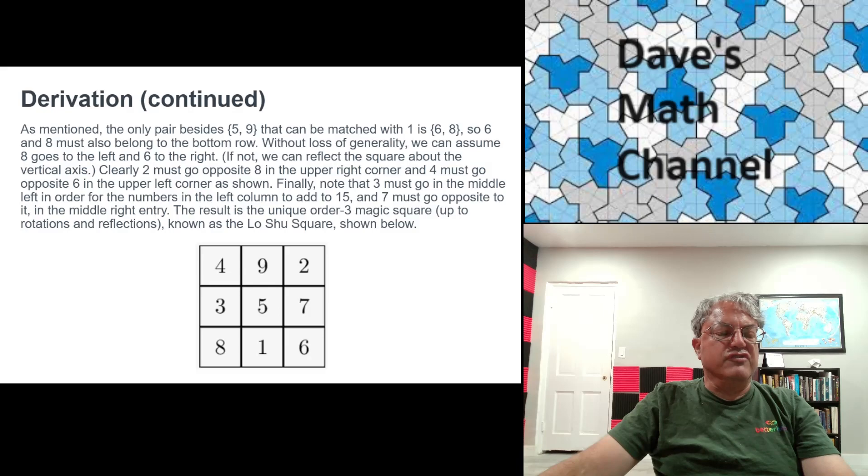And once we've done that, then everything else is pretty much determined. I mean, we know, for instance, the 2 has to be opposite the 8. So the 2 has to be in the upper right entry. The 4 has to be opposite the 6. So 4 is in the upper left. What's left?